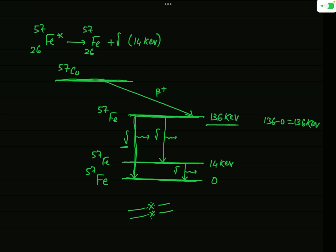However, this is not the only mode of transition. The first excited state of Fe-57 corresponds to 14 keV above the ground state. Fe-57 in its second excited state may transit to the first excited state, emitting a gamma photon. The energy of this gamma photon is 136 minus 14 = 122 keV.